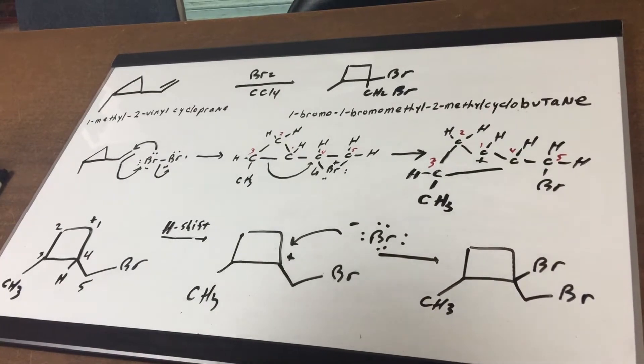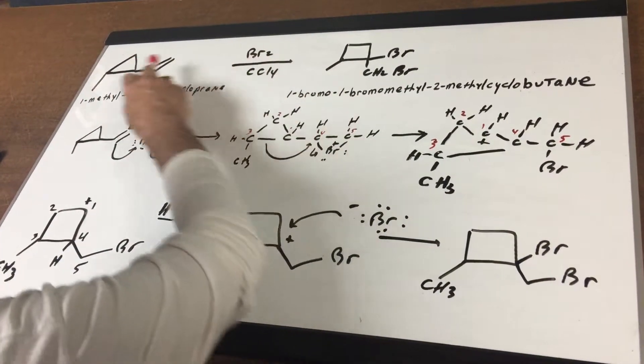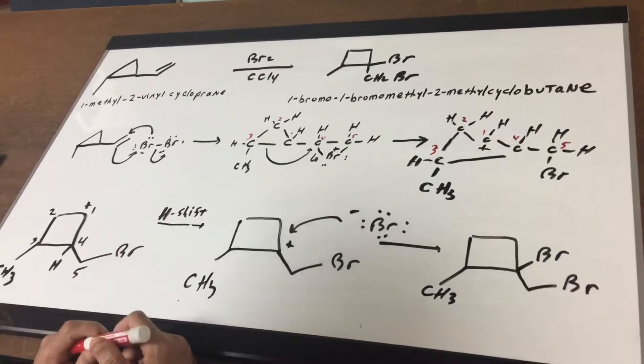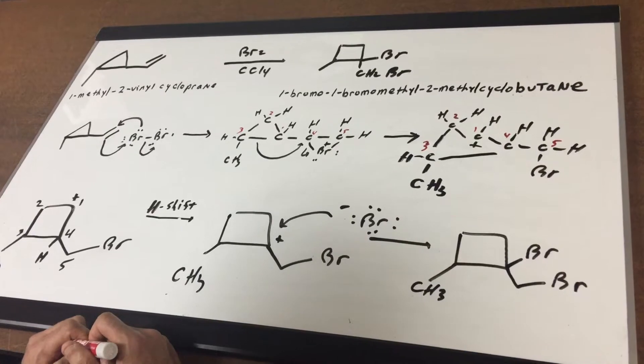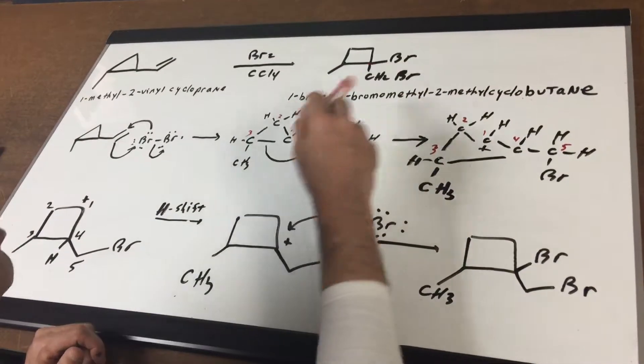What I want to do in this type of question is to convert one ring of a small size into a size that's a little bit larger. So I'm gonna go from one-methyl-two-vinyl cyclopropane into one-bromo-methyl-two-methyl cyclobutane. Try to say that a few times.